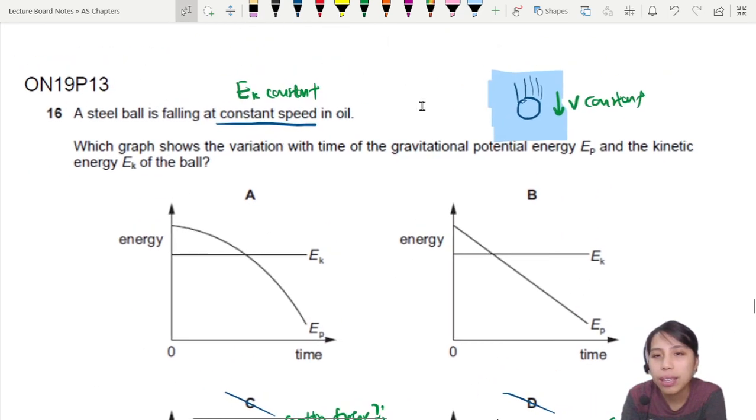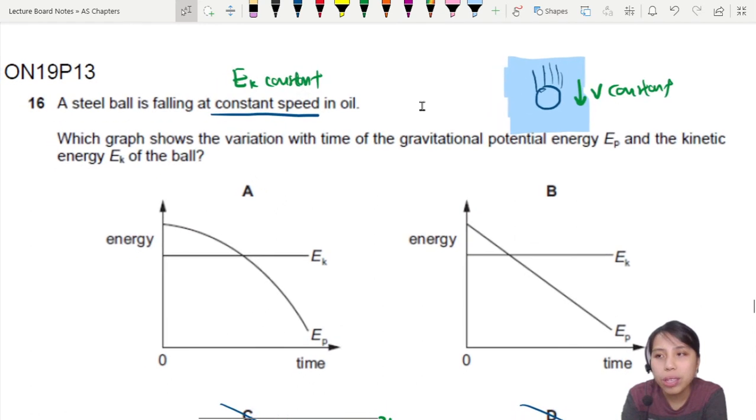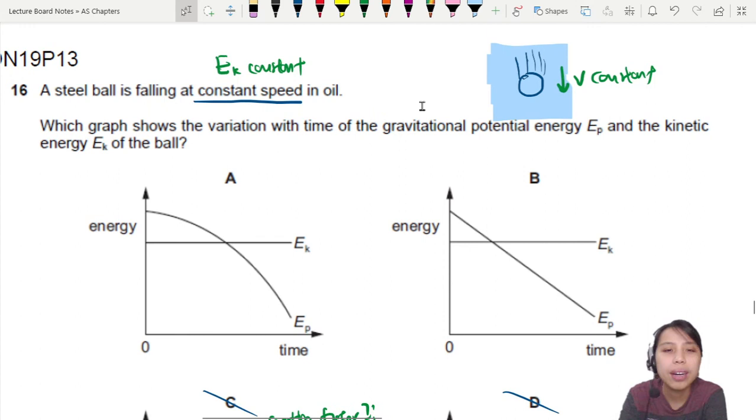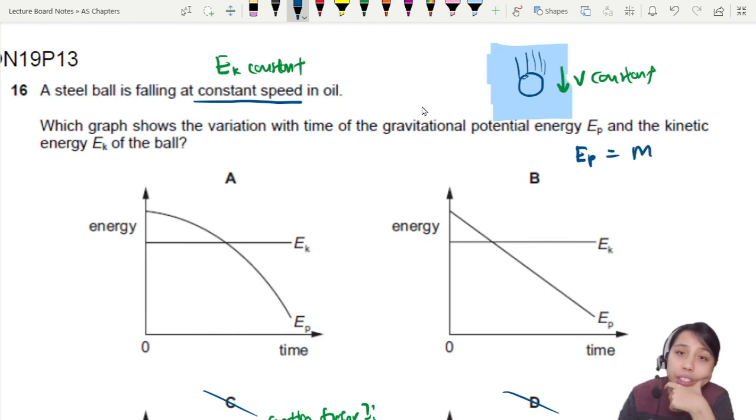Between A and B, we need to decide for GPE. Is it going to be a curve or is it going to be a straight line? How do we know? One way to think of it is, EP is mgh, right? So we can conclude that EP... Wait a second, you see the axis is time. We need to somehow link time into here.